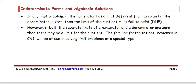Indeterminate forms and algebraic solutions. In any limit problem, if the numerator has a limit different from zero and the denominator is zero, then the limit of the quotient does not exist. However, if both the numerator and denominator approach zero, then there may still be a limit for the quotient. The factorization techniques from Chapter 1 will be used in solving these limit problems.